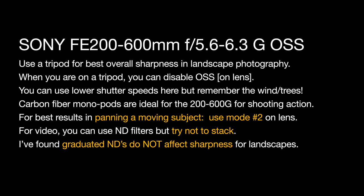I love using carbon fiber monopods — these are ideal for the 200-600G for shooting action especially. At the end of this video I'm going to show you one that I use a lot. For best results in panning a moving subject, use mode 2 on the lens — it's the bottom-most switch on that section. Mode 2 will work best with pans. And for video, you can use ND filters, but try not to stack them. I've found that graduated neutral density filters do not affect sharpness for landscape photography, so that's good news.